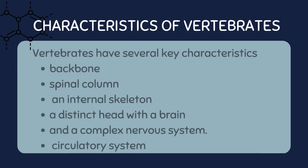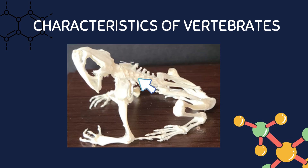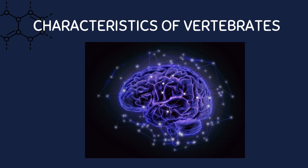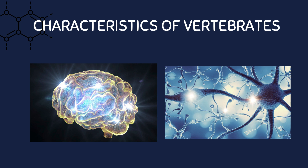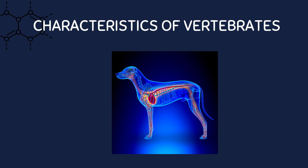Vertebrates have several key characteristics that set them apart from invertebrates. These include a backbone or spinal column, an internal skeleton, a distinct head with a brain and a complex nervous system. Vertebrates also have a closed circulatory system and are typically larger and more complex than invertebrates.